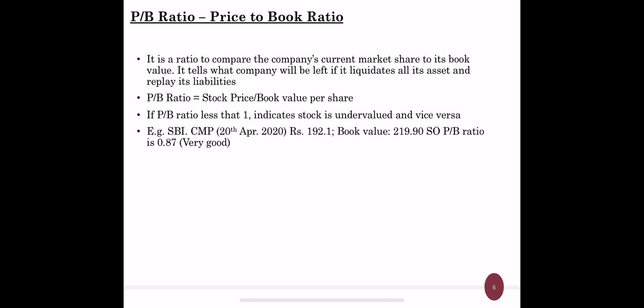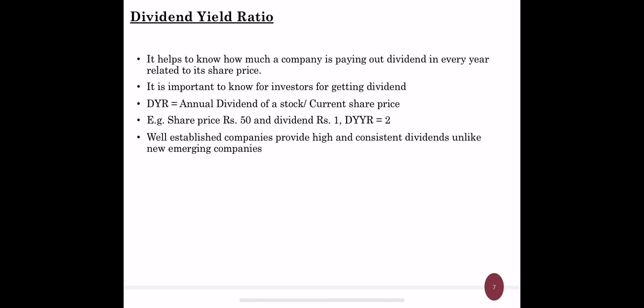Next is dividend yield ratio, which helps to know how much a company is paying out in dividends every year relative to its share price. This ratio is very important for investors seeking dividend income or regular income. Dividend yield ratio equals annual dividend of a stock divided by current market price. For example, if a share price is 50 rupees and it pays a dividend of 1 rupee per year, the dividend yield ratio is 2% (1/50 × 100). Dividends are generally paid by well-established companies with constant high revenue.